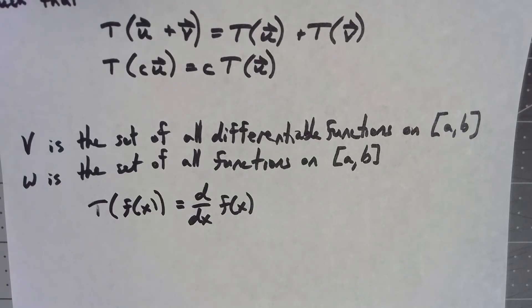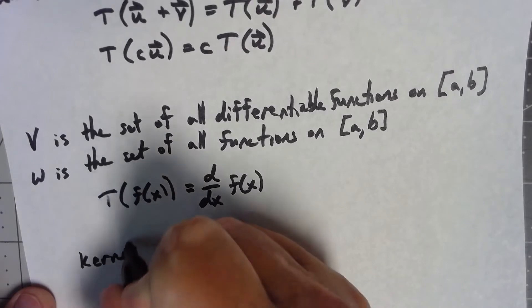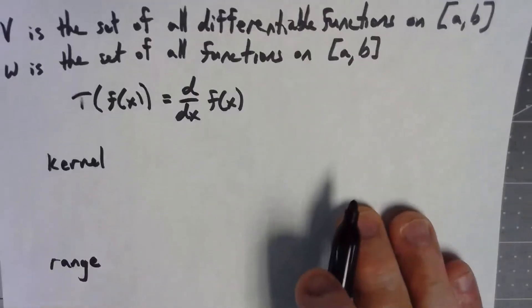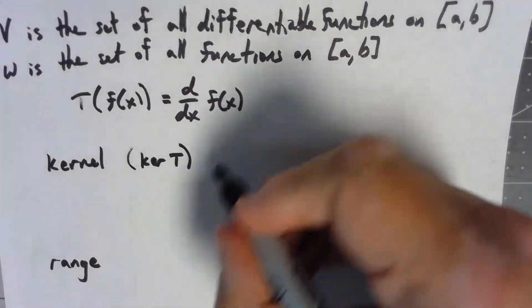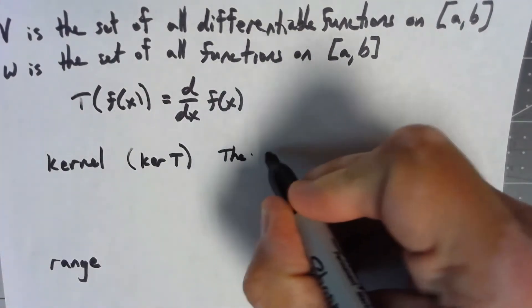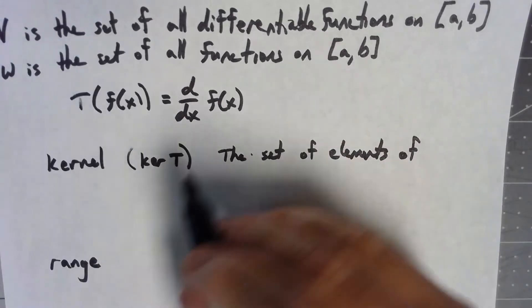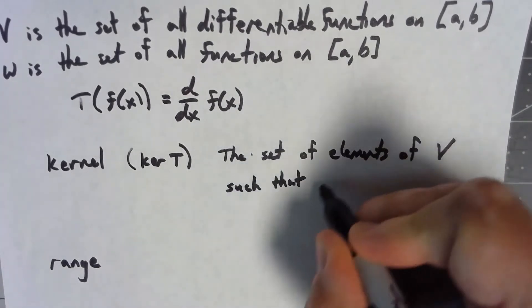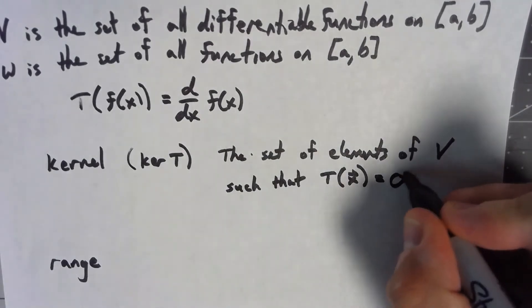Now that we hopefully have some idea of how this linear transformation works, I want to think about two important sets. We call them the kernel and the range. The kernel, which is often denoted as ker T, is basically the set of elements of V such that T of that vector is equal to the zero vector in W.